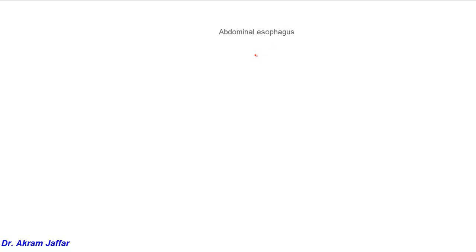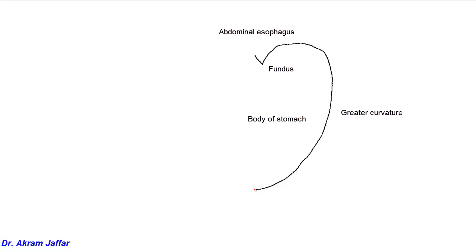First, I will draw the structures that are supplied by the celiac trunk. Here's the distal end of the esophagus, and the fundus of the stomach here. The stomach is supplied by the celiac trunk. Greater curvature of the stomach, pyloric region, then the duodenum — first part and second part of the duodenum.